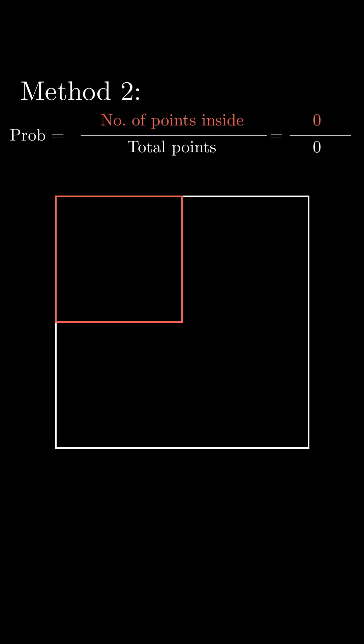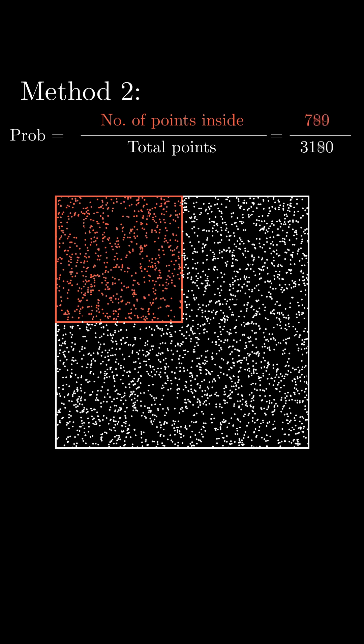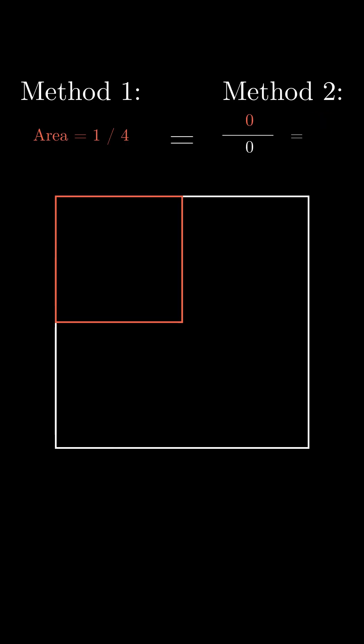The second method is you can throw a bunch of darts and just count how many fall within the small square compared to how many you throw. And sure enough, this comes out to be one-fourth also.